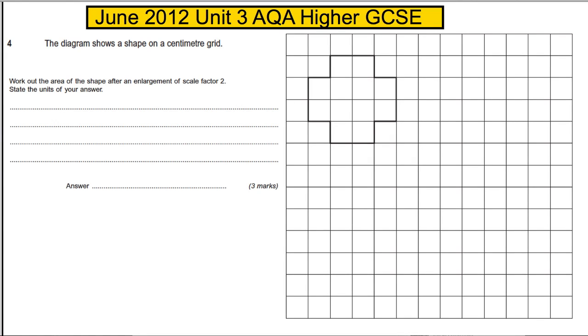This question is an easy three-mark question on enlargements. We're told we have a shape on a centimetre grid. Work out the area of the shape after an enlargement of scale factor 2. State the units of your answer.